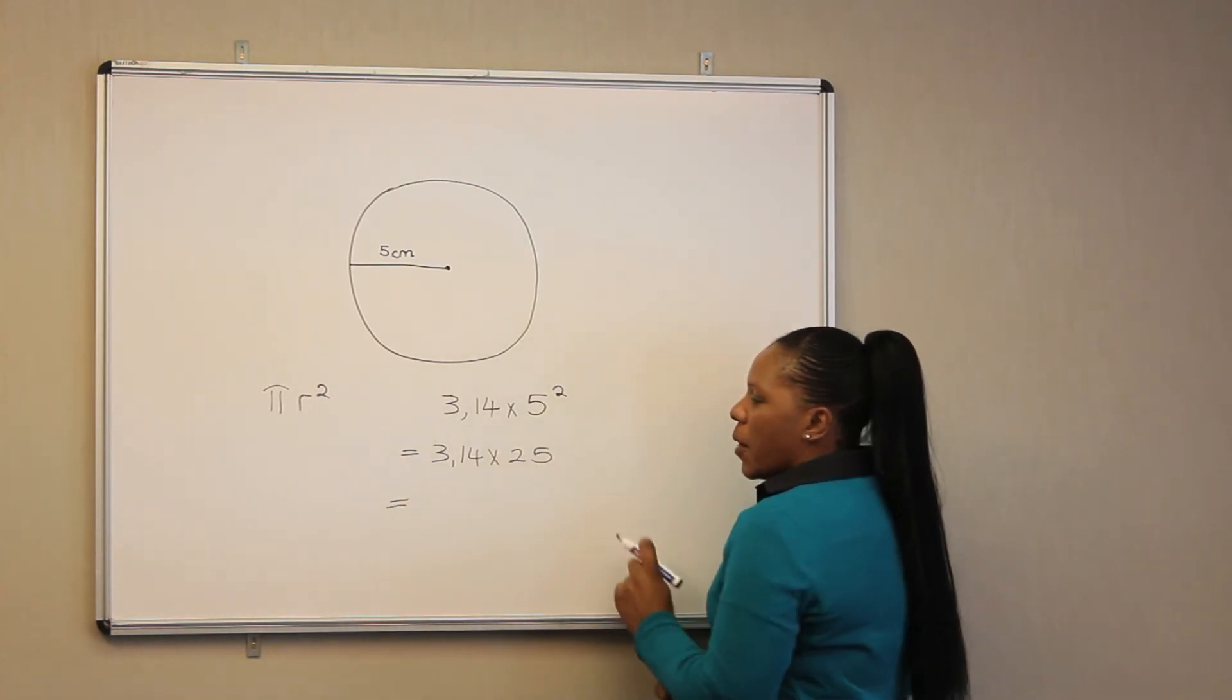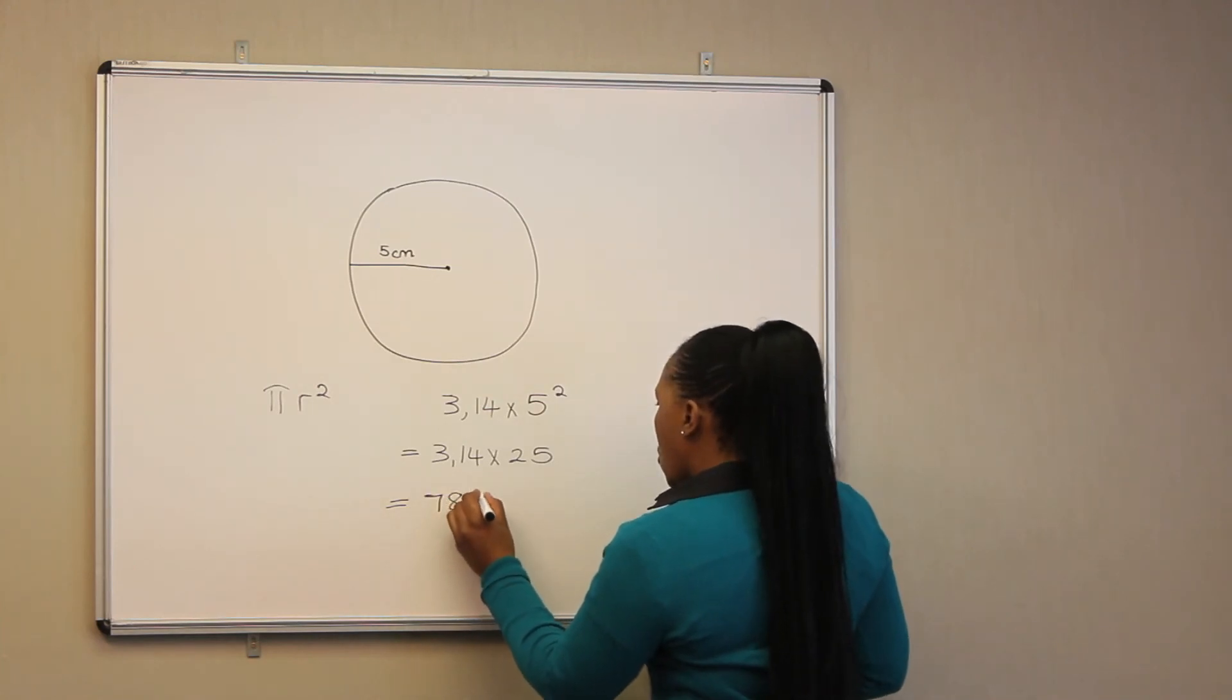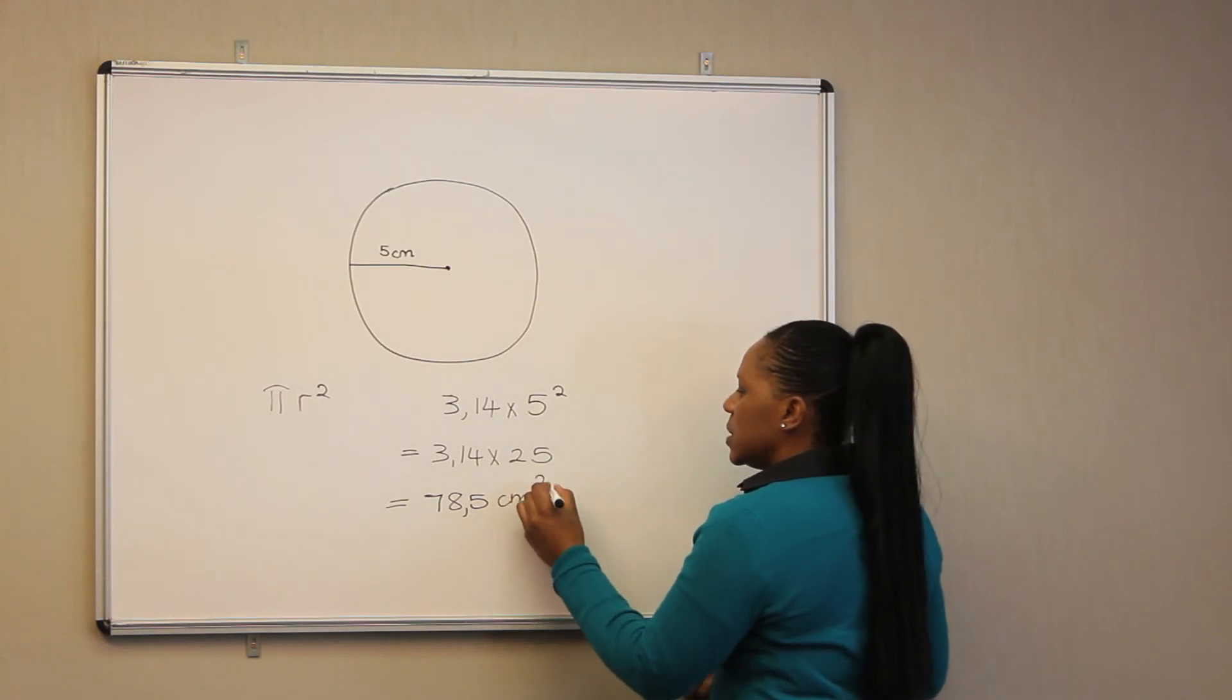Then 3.14 multiplied by 25, we are going to get our answer as 78.5 square centimeters.